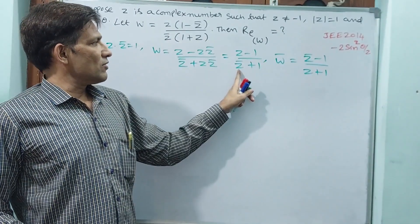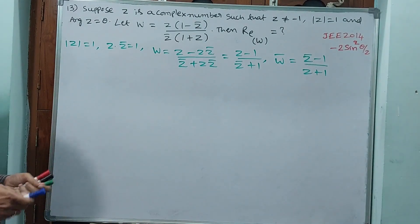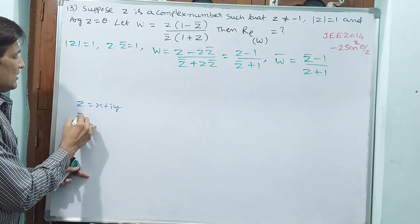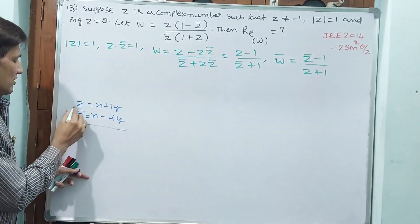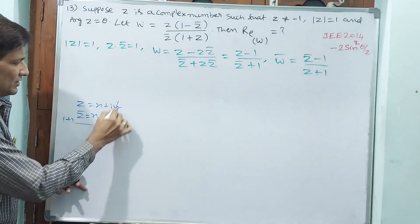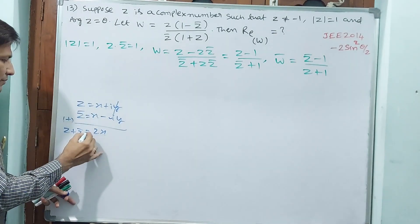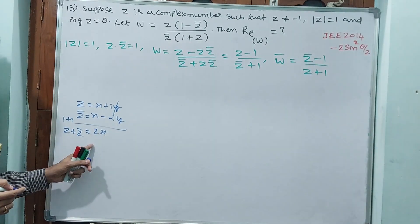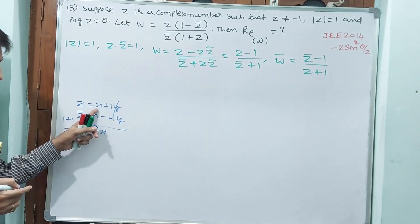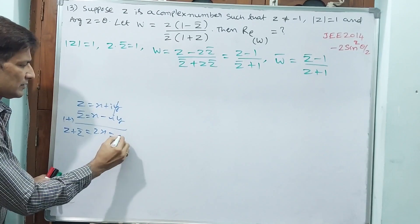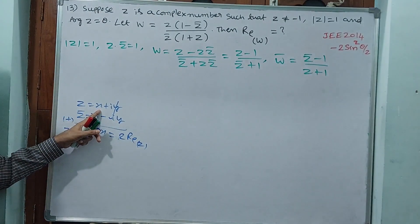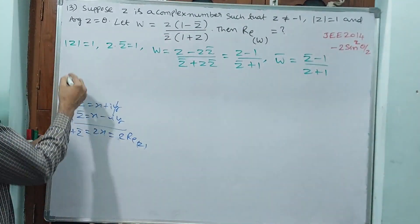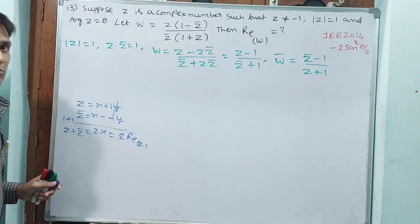Taking the conjugate: conjugate of a normal number gives a real number. Now, if Z equals X plus iY, then Z̄ equals X minus iY. Adding them gives Z plus Z̄ equals 2X, which is two times the real part of Z. We use this because they are asking for the real part of W — that is why we use this concept.